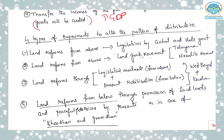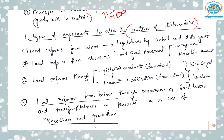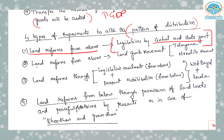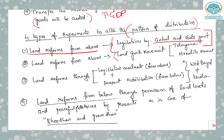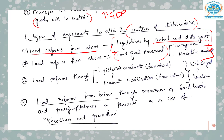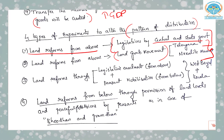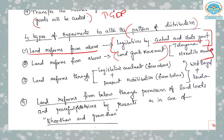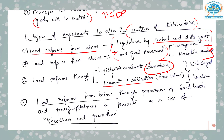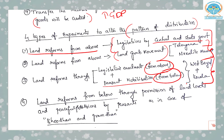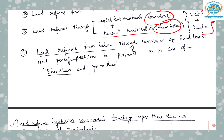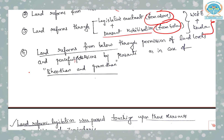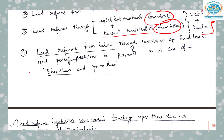What are the four types of experiments to alter the pattern of distribution? In India, the first is land reforms from above through legislations by central and state governments. There is also another form from above — the land grab movement, which happened in Telangana and the Naxalite movement; one is legal, the other is illegal. Third is land reforms through both legislative enactments from above and peasant mobilization from below, as happened in West Bengal and Kerala. The fourth experiment is land reforms from below through persuasion of landlords and peaceful processions by peasants, as in the case of Bhoodan and Gramdan movement.